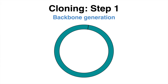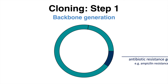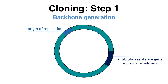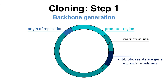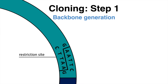Common elements of the plasmid are an antibiotic resistance gene, an origin of replication which enables replication of the plasmid inside the bacterial cell, and a promoter region that can drive gene expression for the gene that will be pasted downstream of it. The backbone also contains different restriction sites — specific DNA sites where the DNA can be cleaved later. Most restriction sites lie downstream of the promoter region.